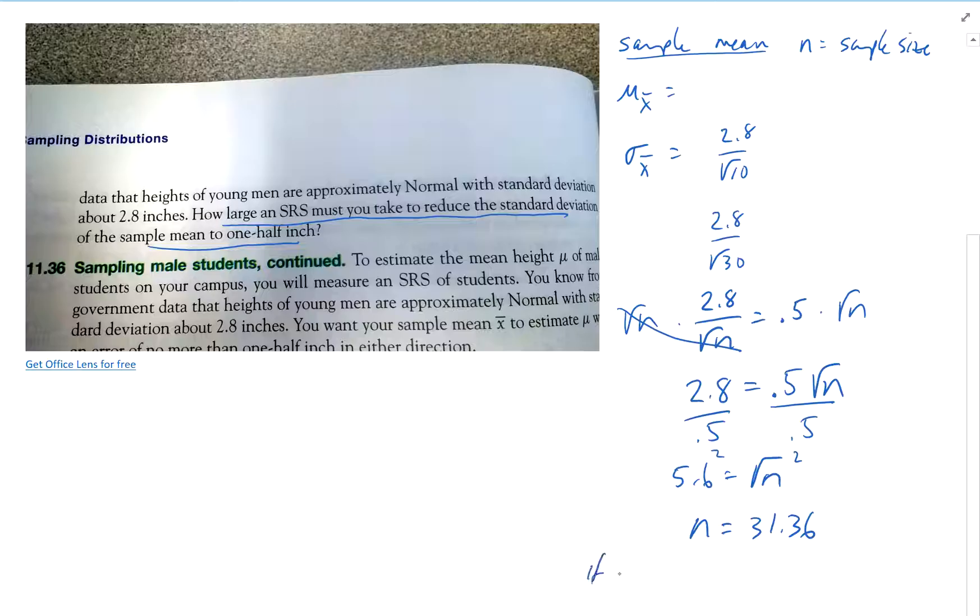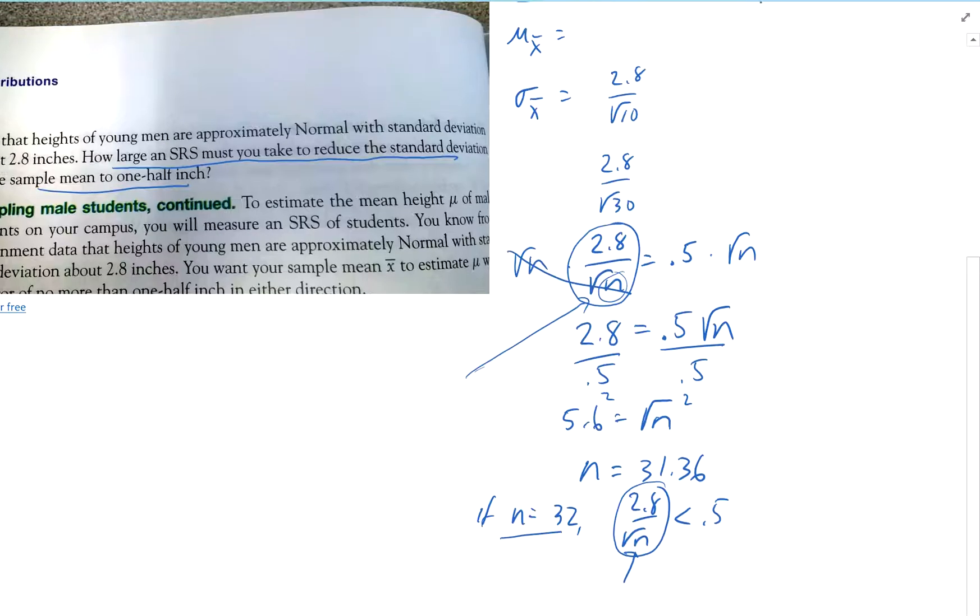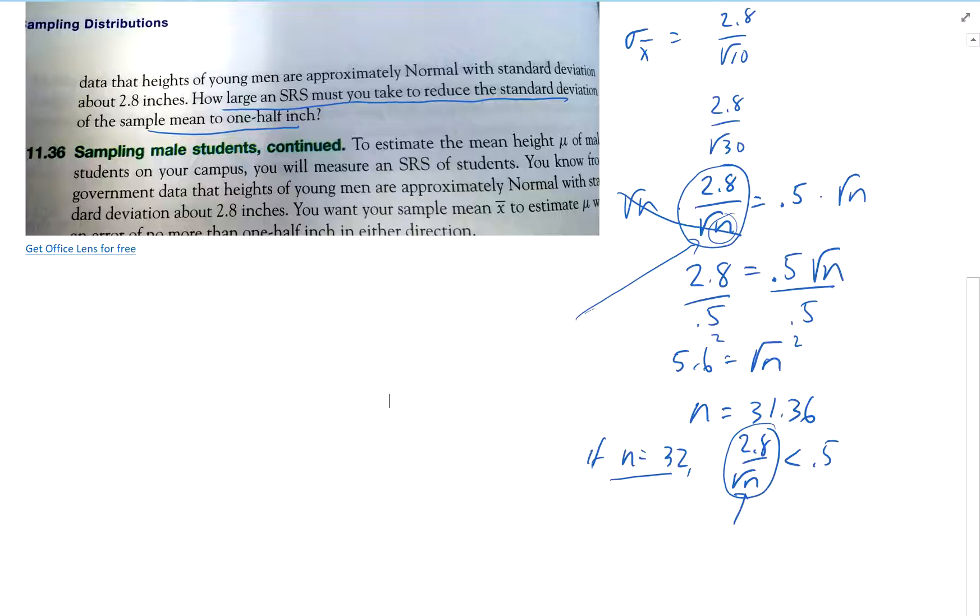So if n equals 32, 2.8 over the square root of n will be less than 0.5. Because the bigger n is, the smaller the fraction is. Because it ends in the bottom, in the denominator. So that's what we want to do. We want to go to the next higher number. Because the bigger the denominator is, the smaller the whole fraction is.